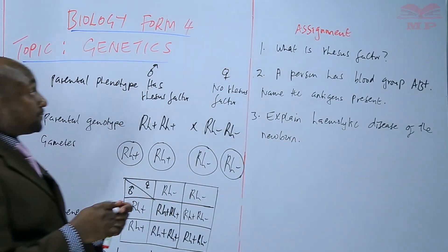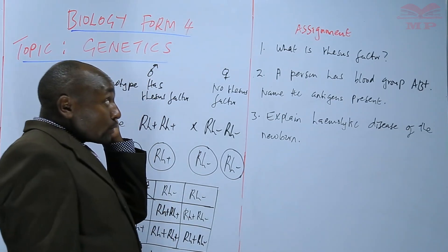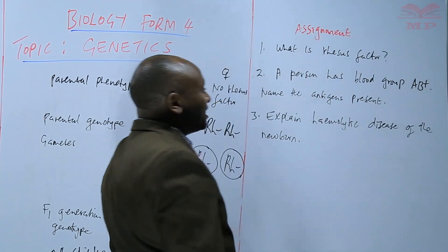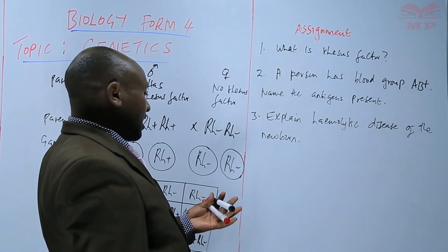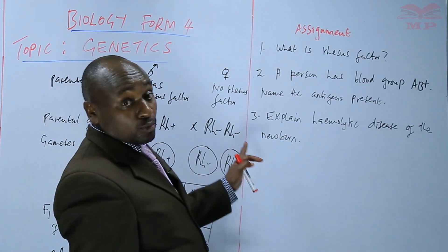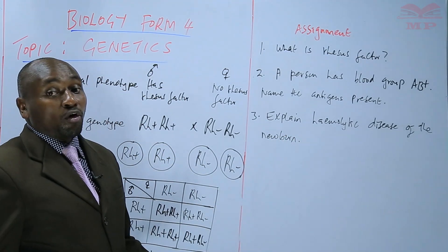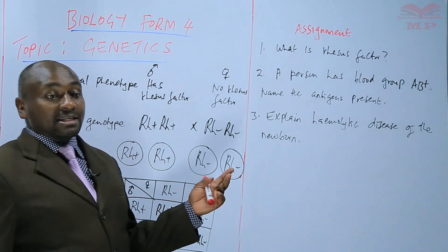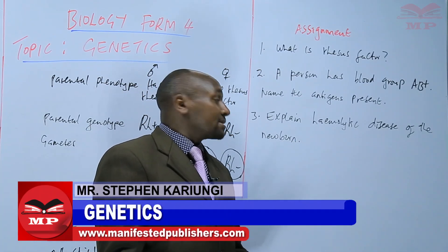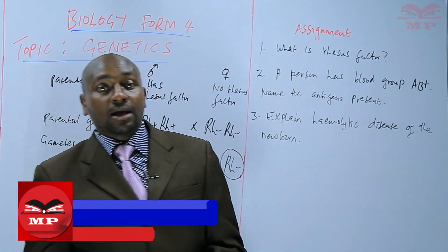For the assignment: question one — what is the Rhesus factor? Question two — a person has blood group AB positive; name the antigens present in this blood group. Question three — research and explain haemolytic disease of the newborn, which is a disease that comes as a result of the Rhesus factor. Find out about haemolytic disease of the newborn and how it occurs. We will continue from there. Until next time, goodbye.